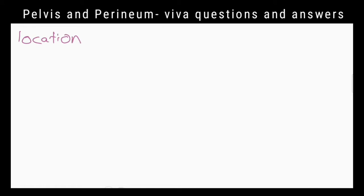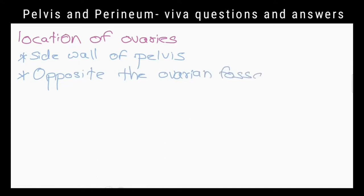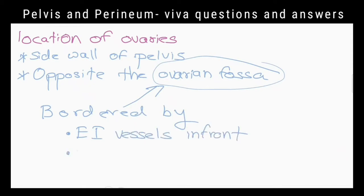Where do the ovaries lie? They lie on the side walls of the pelvis, opposite the ovarian fossa, bordered by the external iliac vessels in front and the internal iliac vessels behind.